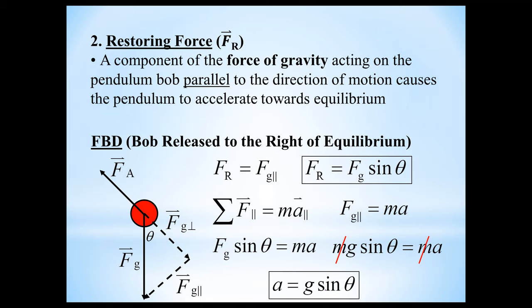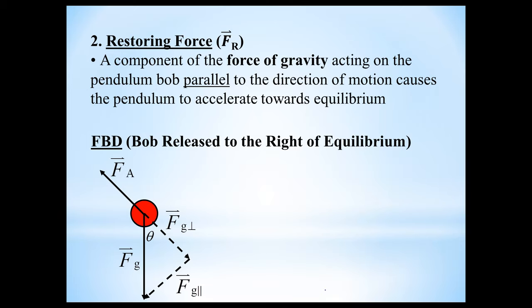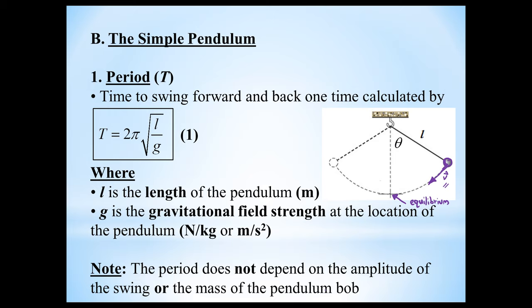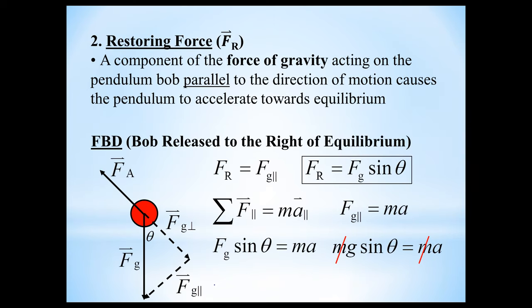Now let's go back to identifying the factors that have no influence on the period of the pendulum. The mass of the pendulum has nothing to do with the period — we just proved that mathematically, because the mass canceled off in our acceleration equation.